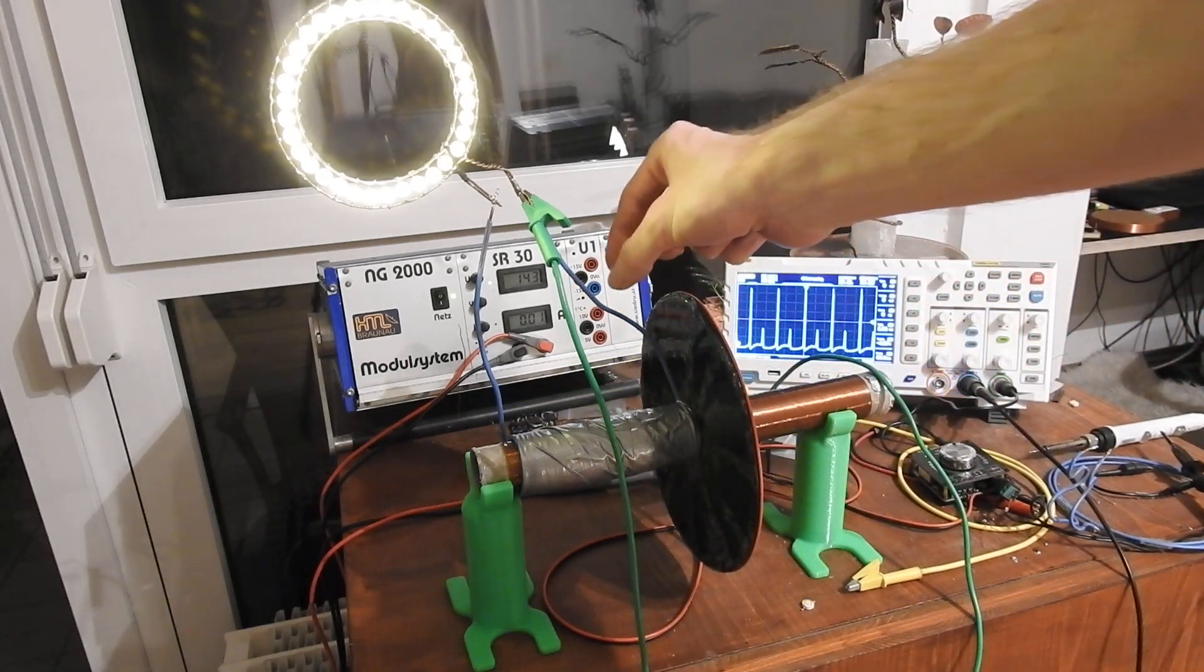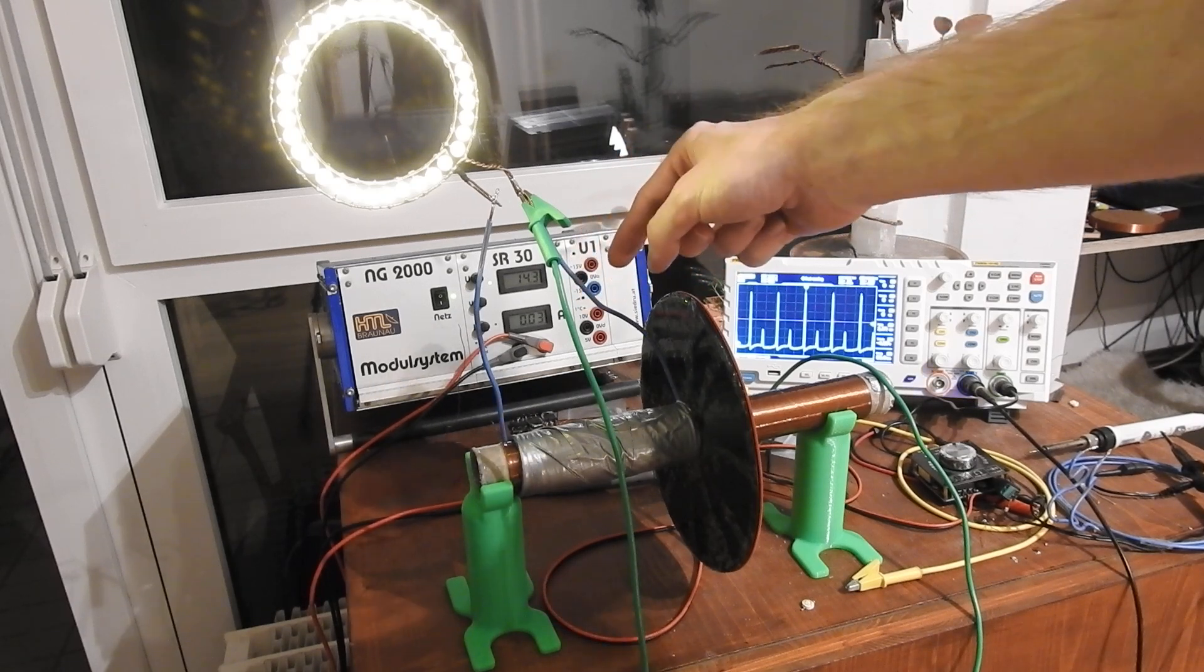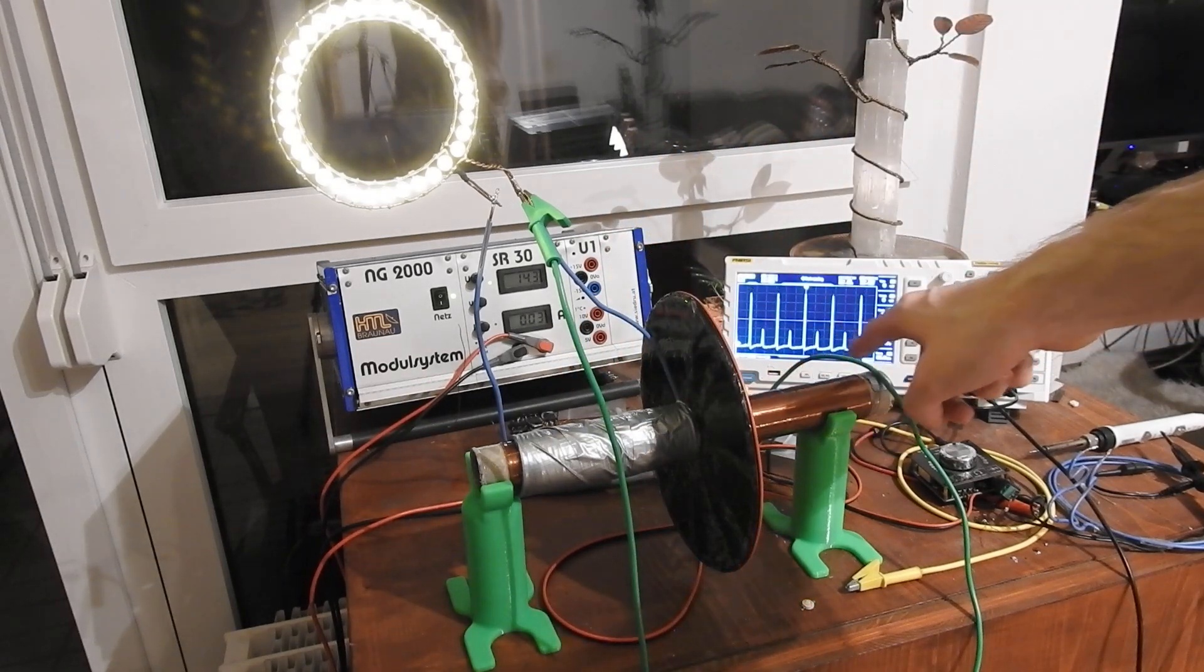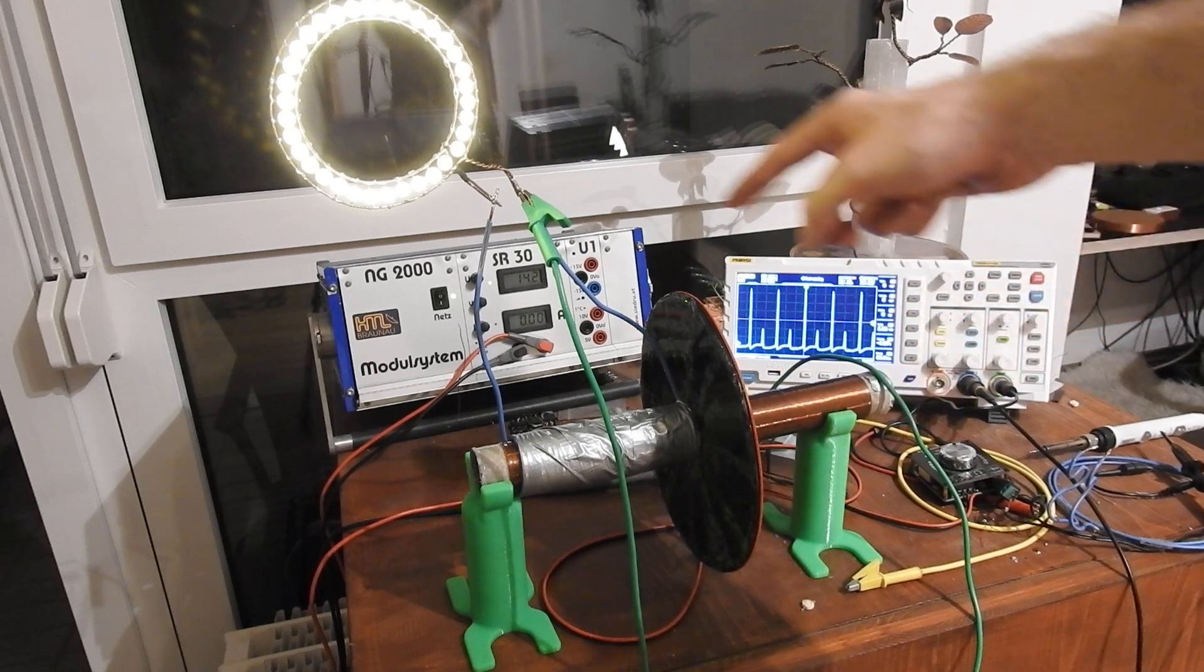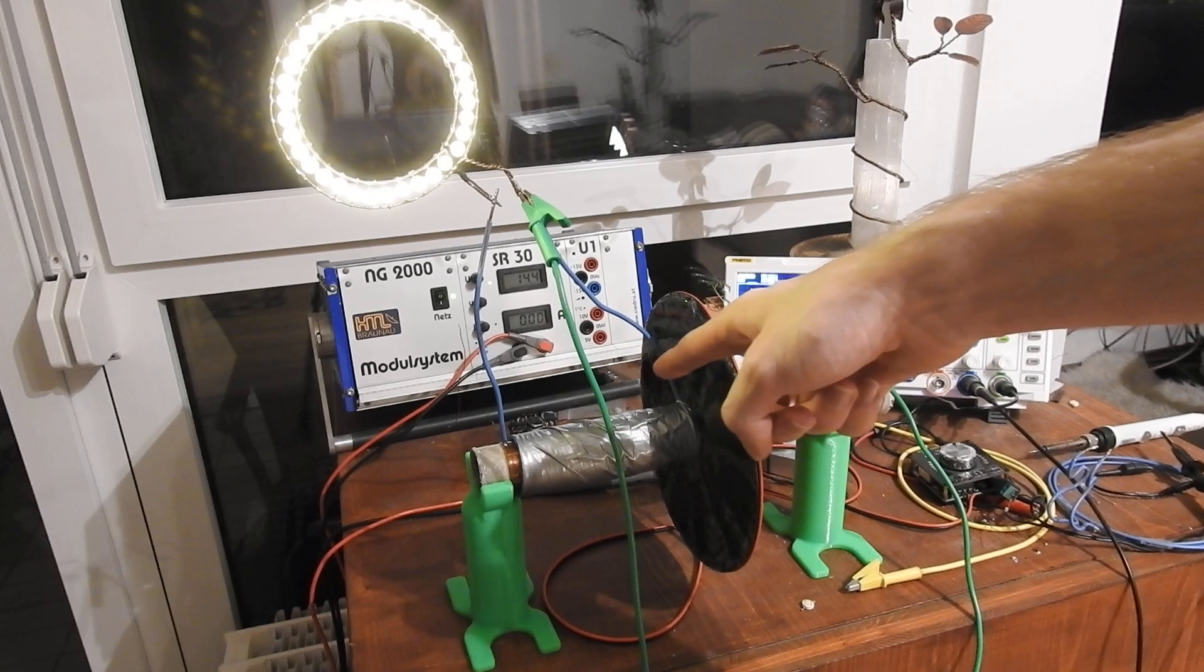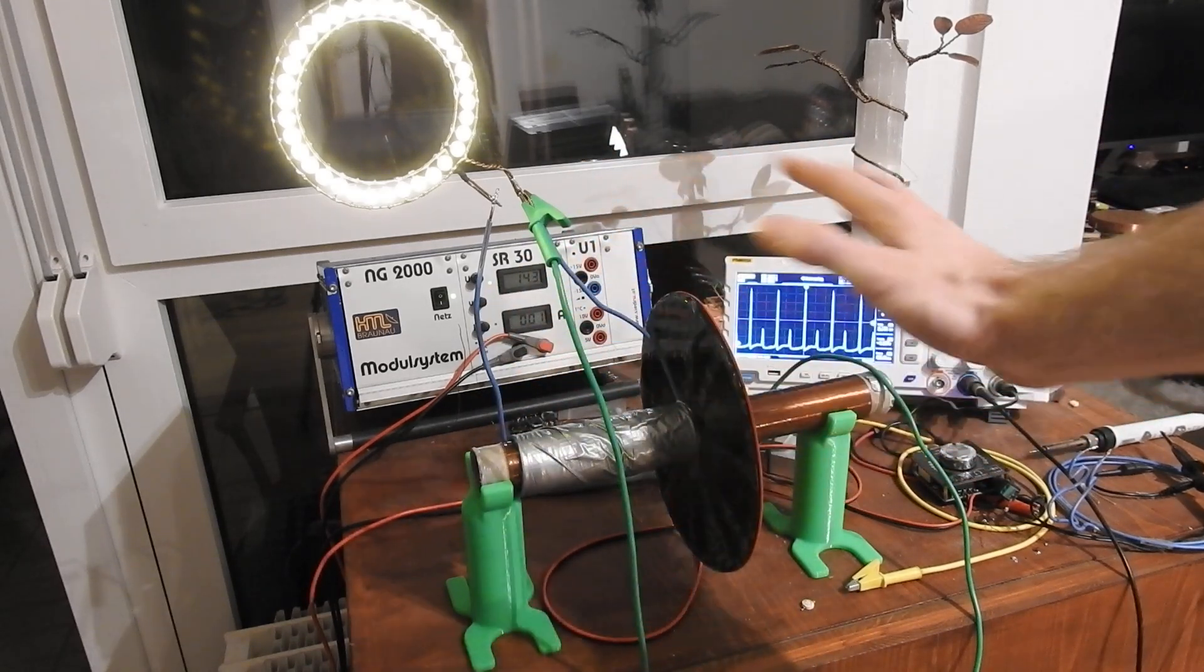And this is made with a 2.5 square millimeter wire, so it's not so many turns like with the fine wire coil. And this is basically to pick up the voltage from this electric field that is generated here.